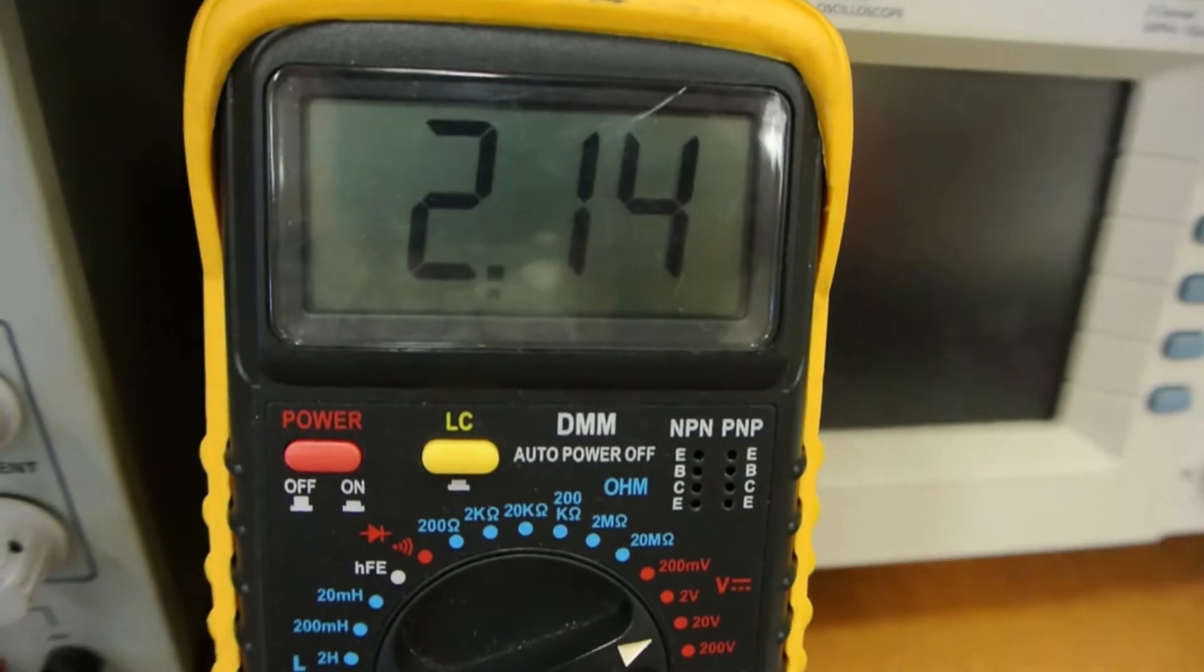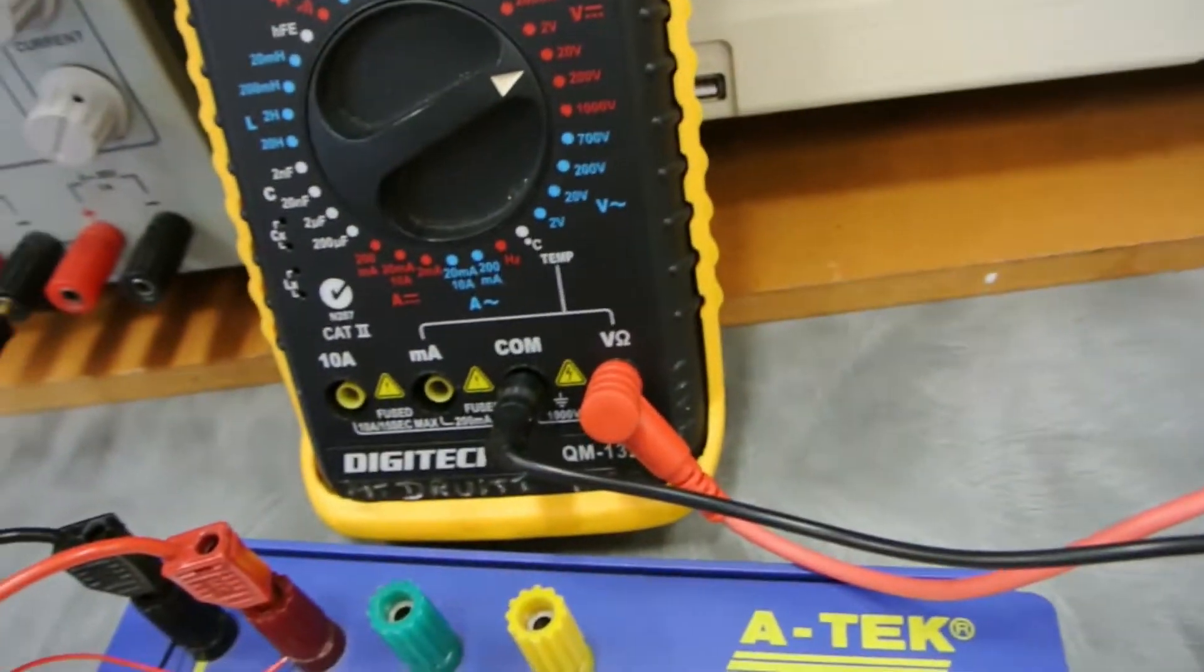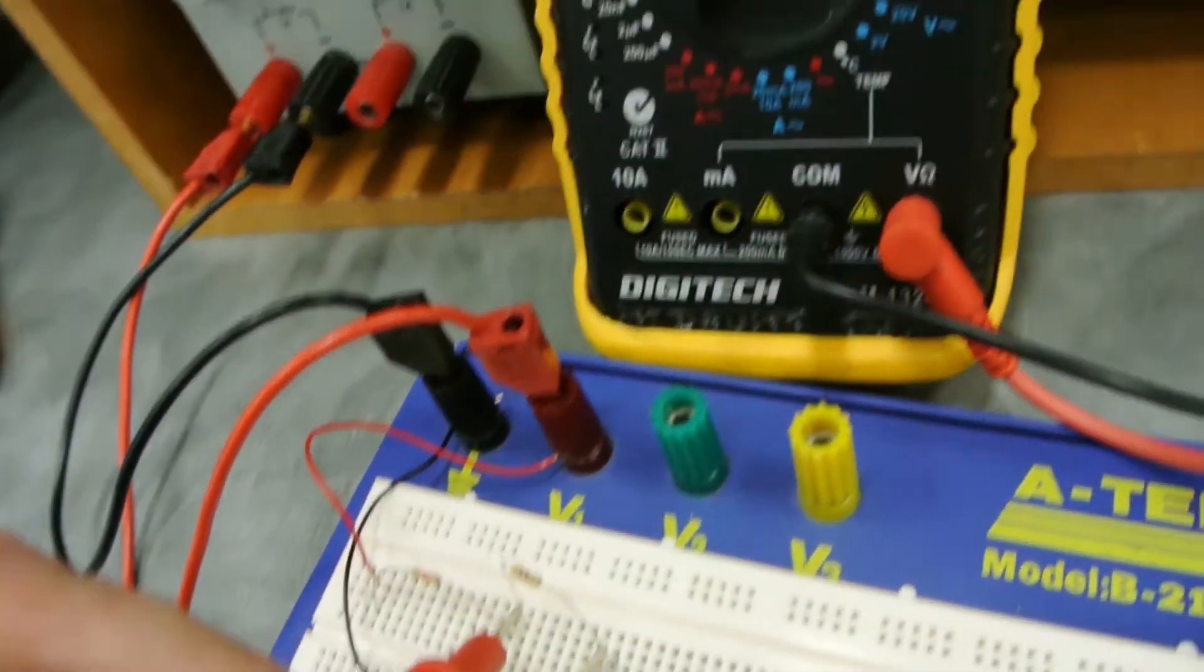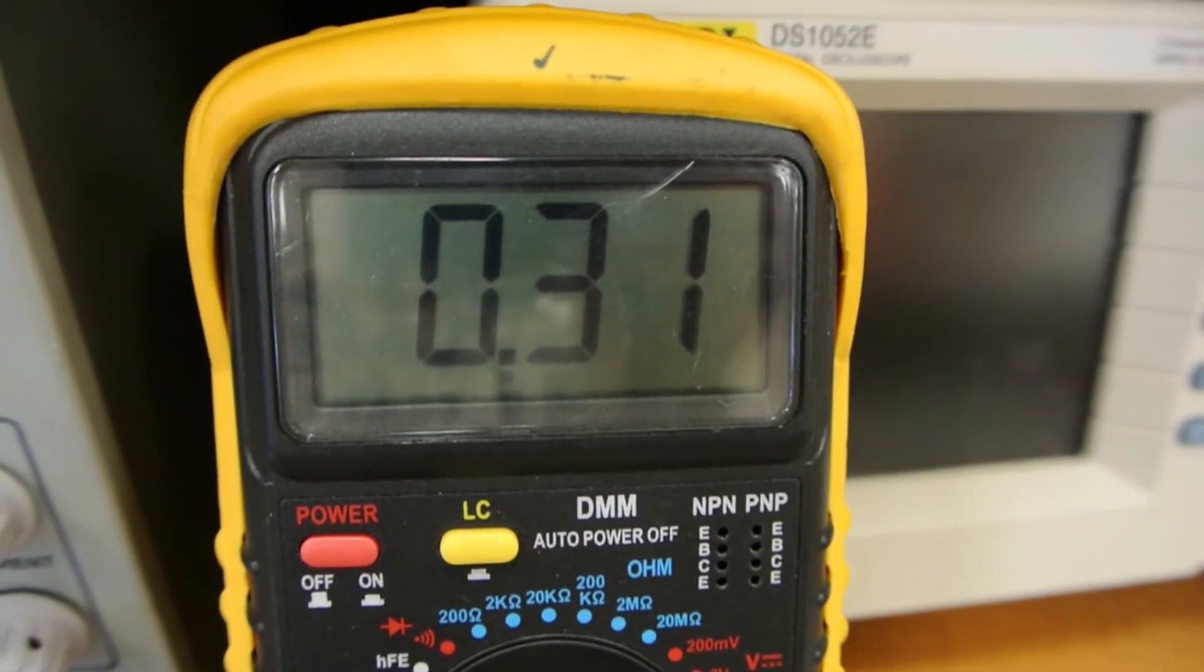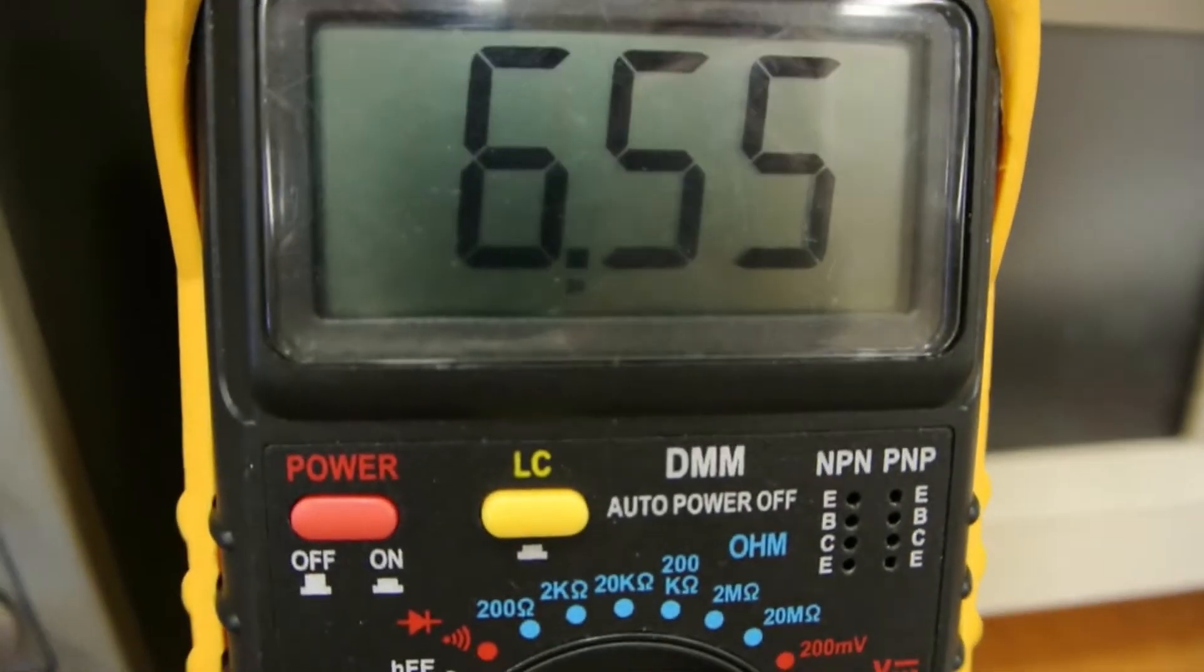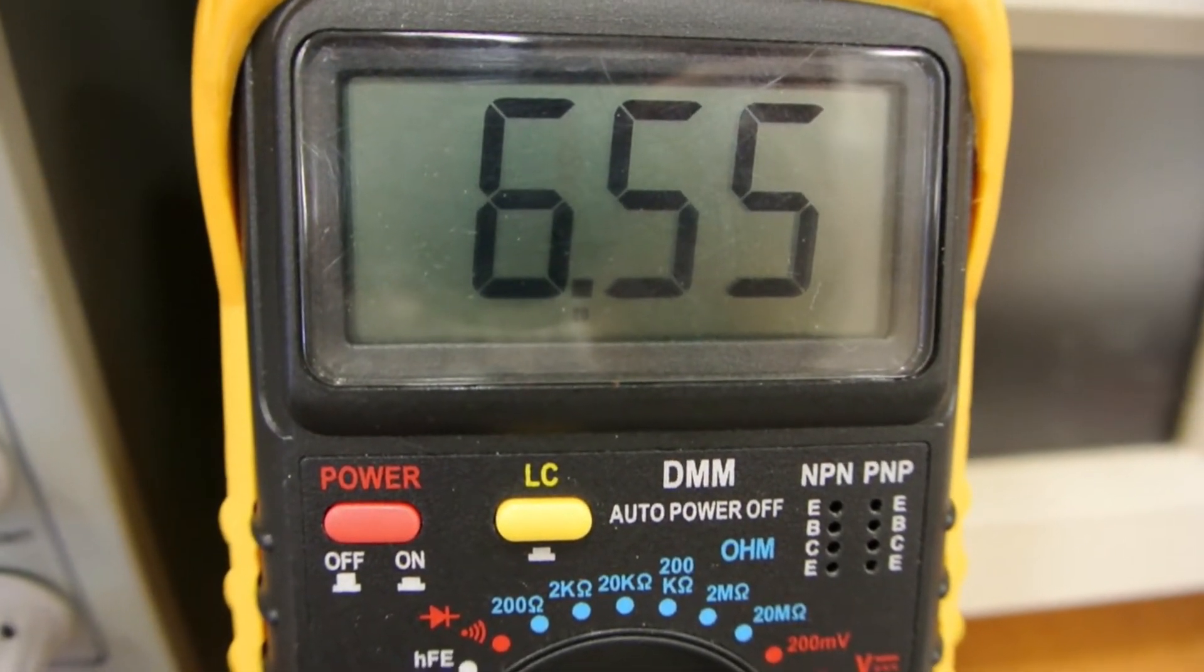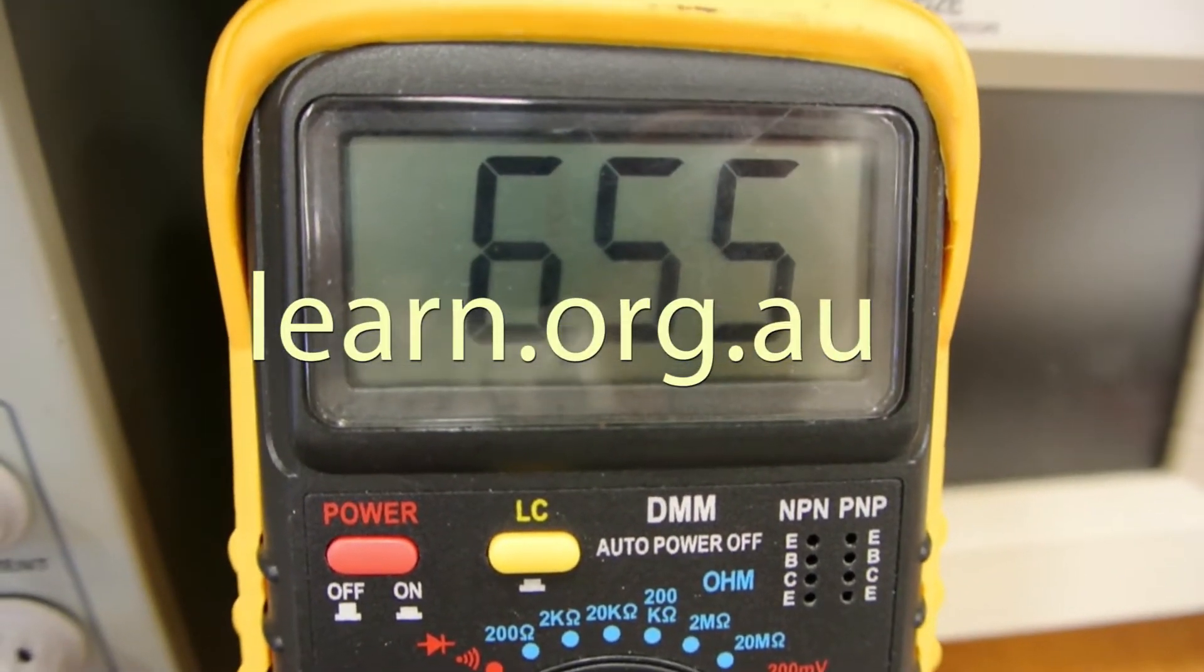The first voltage across the 3.3k ohm resistor is 2.14 volts. Moving that now to the 470 ohm resistor, that's 0.31 volts. And the last resistor, that's the 10k resistor, 6.54 to 6.55 volts. So as expected, the larger the resistance, the greater the opposition to the flow of current. Therefore, the more voltage drop developed across that resistor.